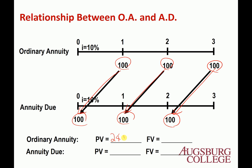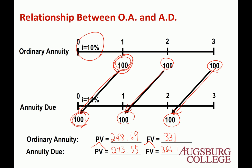The present value of the Ordinary Annuity is $248.69 and the present value of the Annuity Due is $273.55. If you compute the future value using the calculator, you get $331 and $364.10 respectively. The PV of Annuity Due is greater than the PV of Ordinary Annuity because today's $100 is more valuable than tomorrow's $100 — the interest rate is 10%.